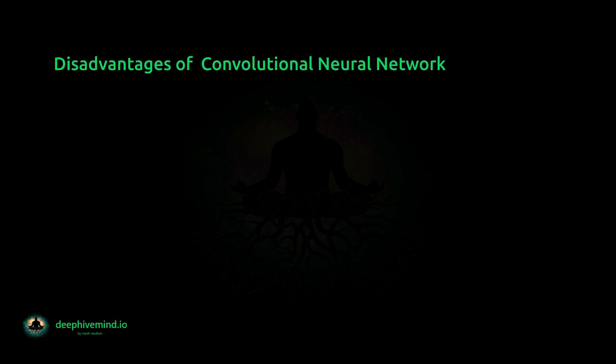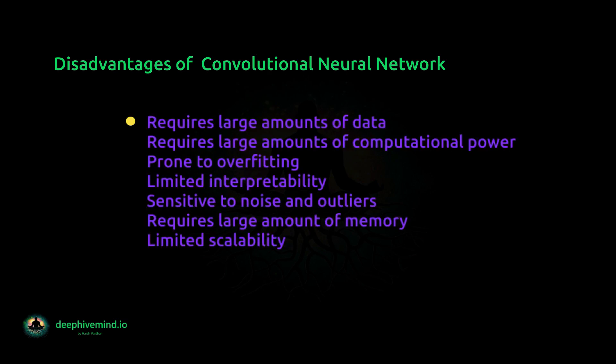Disadvantages of Convolutional Neural Network: CNNs require large amounts of data to train effectively, making them less suitable for tasks where there is limited data available. CNNs also require large amounts of computational power to train, making them less suitable for tasks where computational resources are limited. CNNs can be prone to overfitting, particularly when the amount of training data is limited.